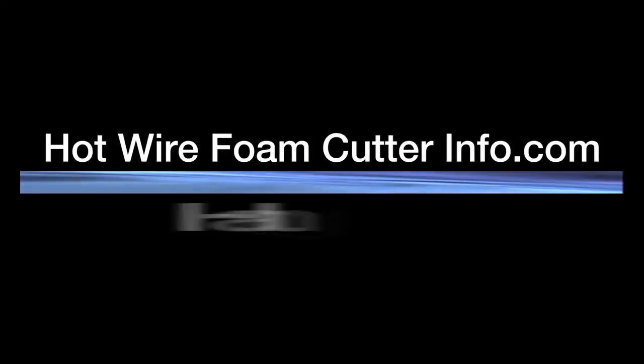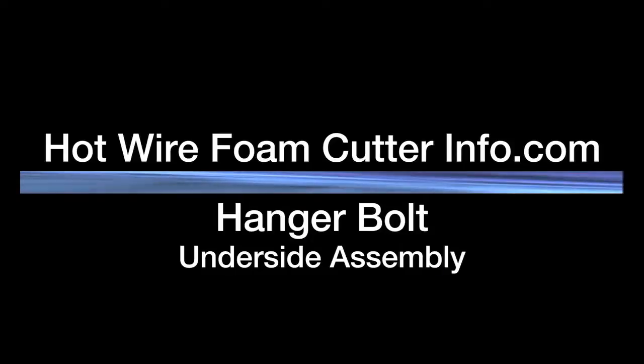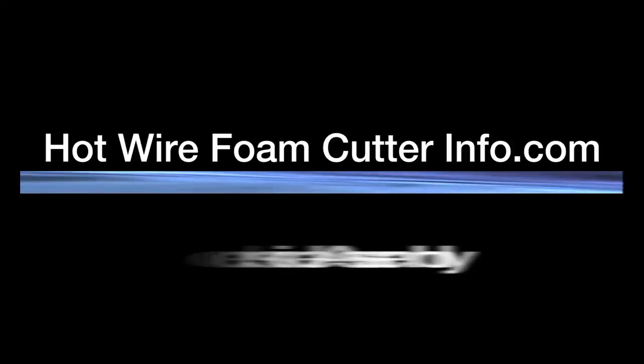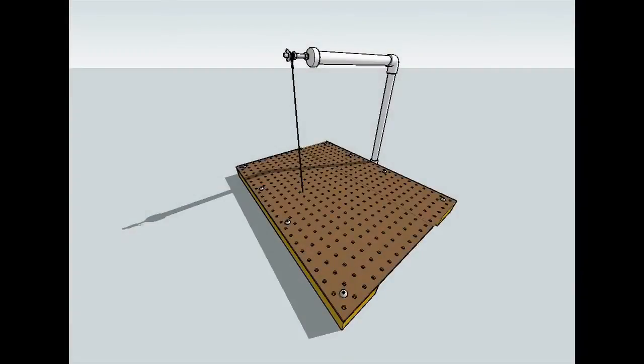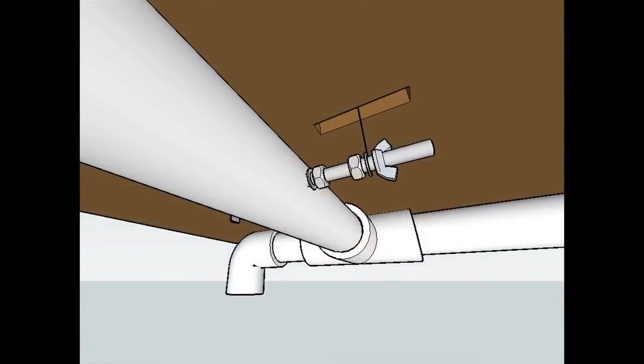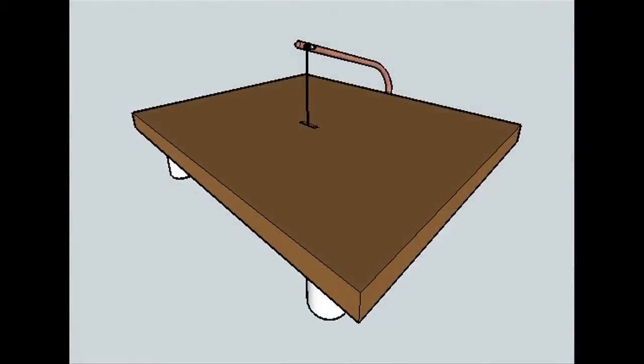Hotwirefoamcutterinfo.com presents the Hanger Bolt Underside Assembly. The hanger bolt is meant to be used with the medium sized vertical table top cutter but may also be used as an alternative underside assembly for the small scale table top cutter.